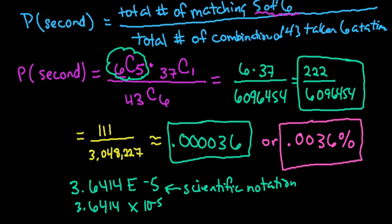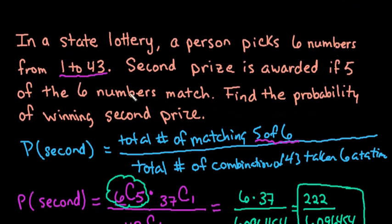Just remember that if you are confronted with a problem like this, no matter how many you are trying to match, you would set it up the same way. You could have these values change. You could find the probability of matching 4 of the 6 numbers. And then instead of doing 6C5, we would do 6C4. And then here, because of the fact that we had 6 of them, we would have 37 taken 2 at a time because we wouldn't want 2 to match.